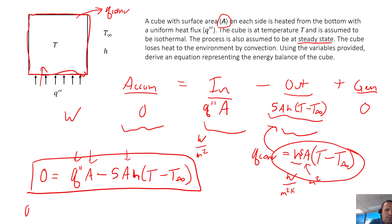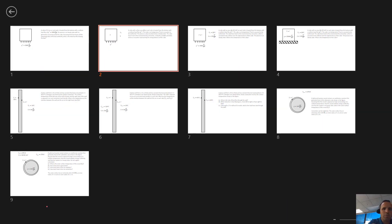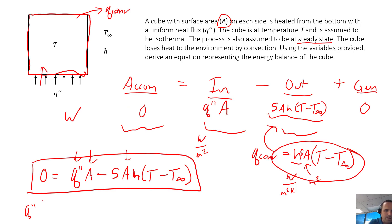Presumably we'd be given some combination of these variables and solve for the other. If we were given the flux coming in, h, T infinity, and A, we could solve for the temperature of the cube. If given the temperature, T infinity, area, and h, we could solve for flux.